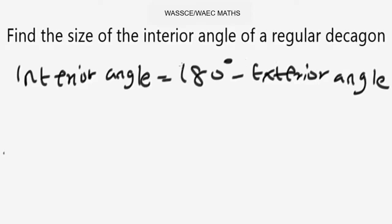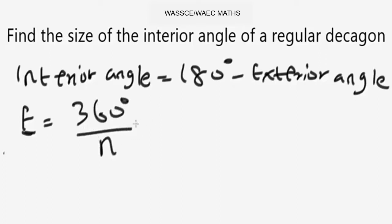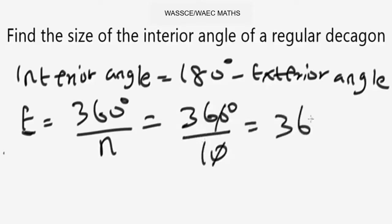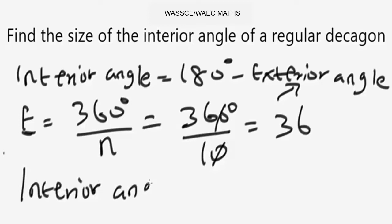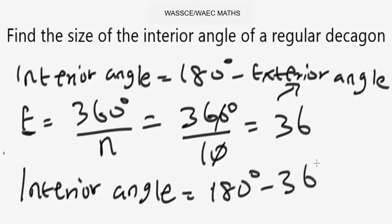First, let's find the exterior angle using: exterior angle equals 360 degrees over n. Our n equals 10 for a decagon, so exterior angle equals 360 divided by 10, which gives 36 degrees. Now plugging into the interior angle formula: interior angle equals 180 degrees minus 36 degrees, which gives 144 degrees. So the interior angle of a regular decagon is 144 degrees.